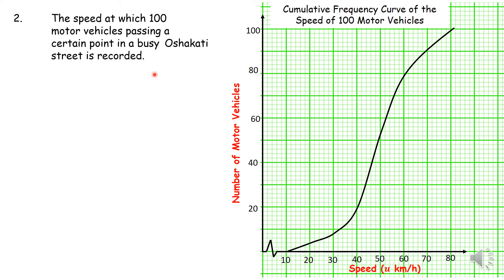So that brings me to a second question here. So this question here says the speed at which 100 motor vehicles passing at a certain point in a busy Oshakati street is recorded. So here you have the cumulative frequency diagram or curve and the curve is drawn for you. So you just need to answer the questions that fall from the curve.